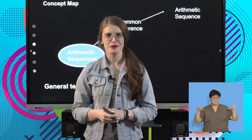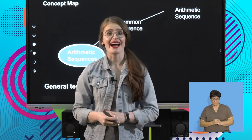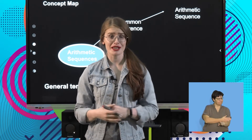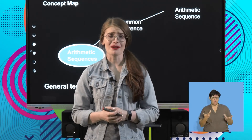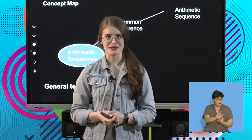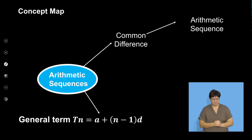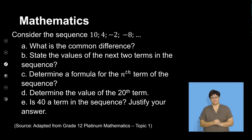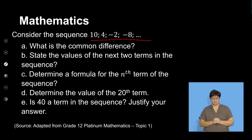Welcome back, everyone. We're going to continue our lesson on arithmetic sequences. Before the break, I had just derived the formula we use for arithmetic or linear sequences. Now we're going to go into an example where we can apply this formula. So we are asked to consider the sequence 10, 4, negative 2, negative 8. We've been asked a few questions on this sequence, so let's have a read through them.